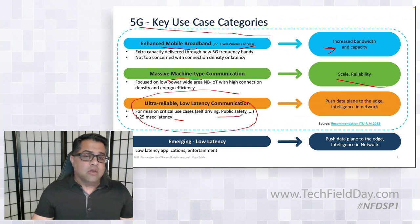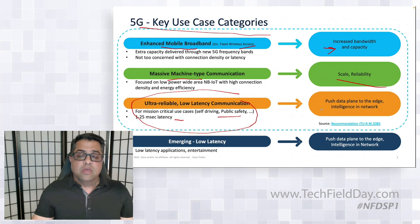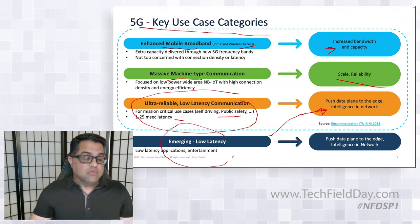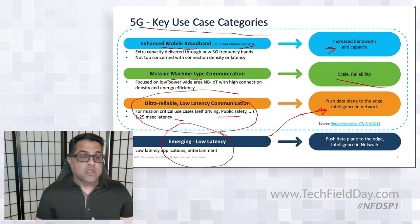What are those services? Augmented reality, virtual reality, tactile internet, smart grids — those are the use cases being defined. What it really means is that network architecture needs to change. You have to push the data plane to the edge, and that basically requires network transformation. Some of these emerging technologies from applications and entertainment will all require network change.